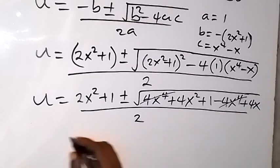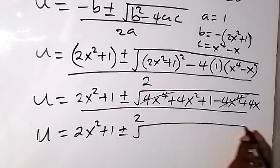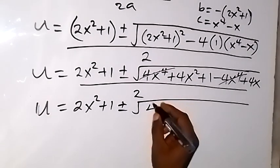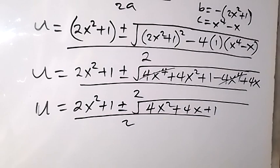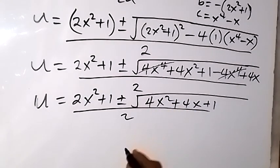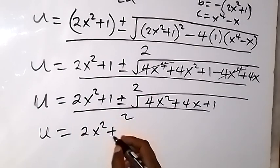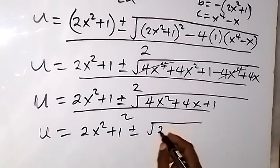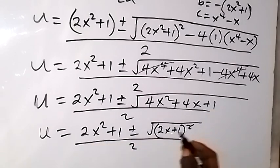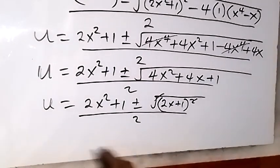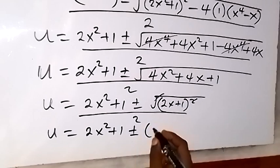So u equals 2x squared plus 1, plus or minus square root of (4x squared plus 4x plus 1), all over 2. The expression inside the root is (2x plus 1) squared, so the square root cancels, giving u equals (2x squared plus 1 plus or minus (2x plus 1)), all over 2.